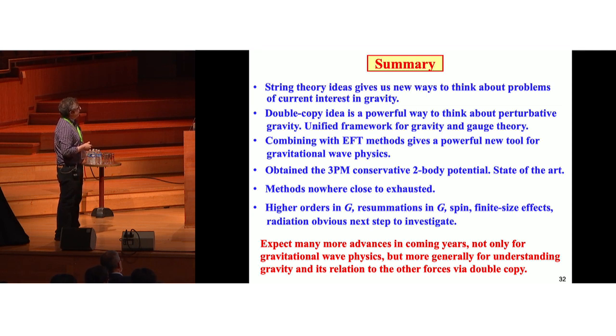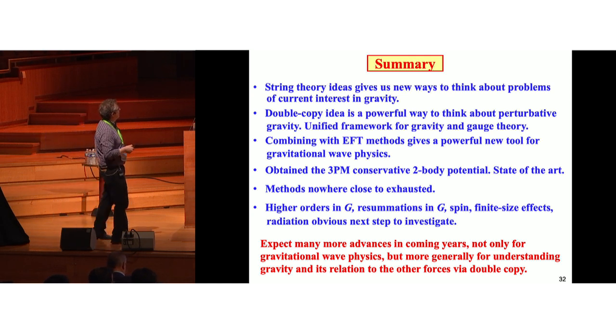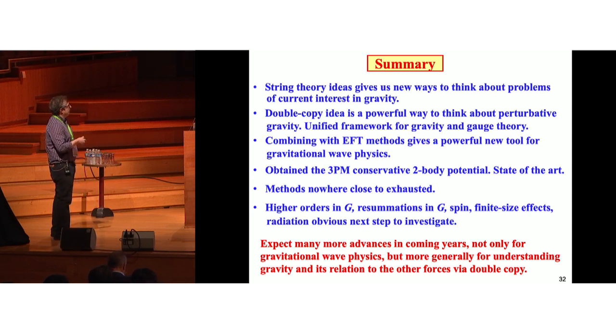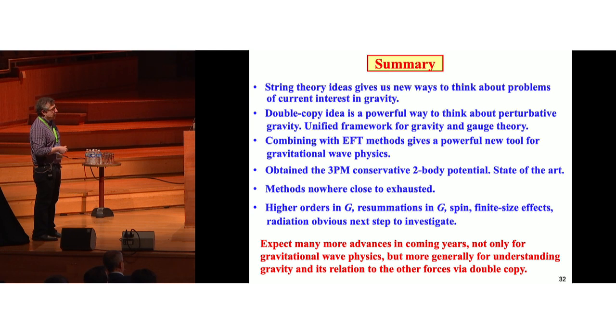So the summary is that string theory ideas, they give us new ways to think about problems of current interest in gravity. The double copy idea is a powerful way to think about perturbative gravity. It's a unified framework for gravity and gauge theory. If you can do a gauge theory calculation, you can always do the corresponding gravity calculation in perturbation theory. And by combining this with effective field theory methods, this gives us a powerful new tool for gravitational wave physics. And the demonstration of that, we obtained the 3PM, third post-Minkowski conservative two-body potential, and this is a state-of-the-art calculation. And I think the best part is the methods are nowhere close to exhausted. Higher order in G, resummations in G, spin, finite size effects, radiation, obvious next steps to investigate. And final summary, I think we can expect many more advances in the coming years, not only for gravitational wave physics, but more generally for understanding gravity and its relation to the other forces through the double copy. Thank you.